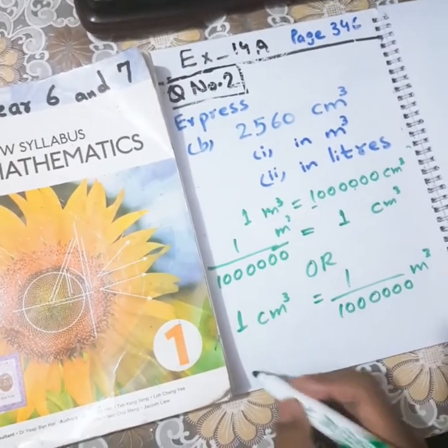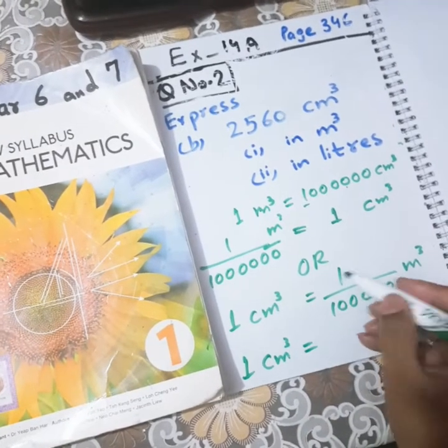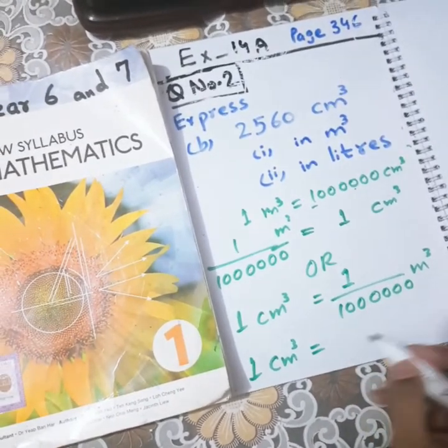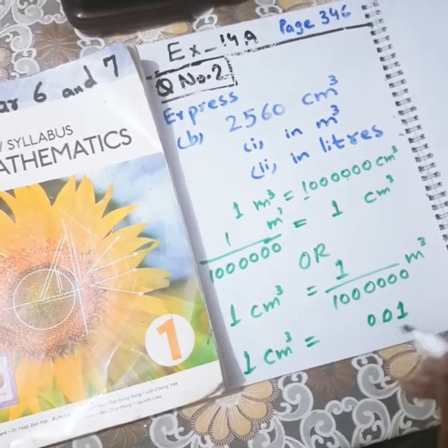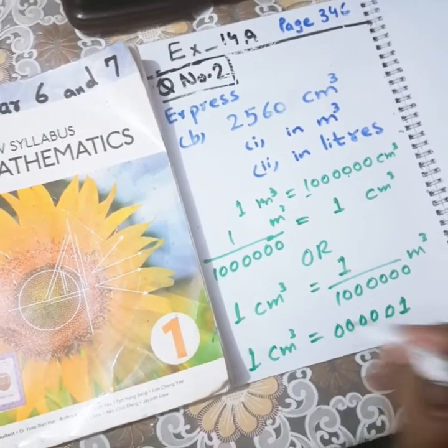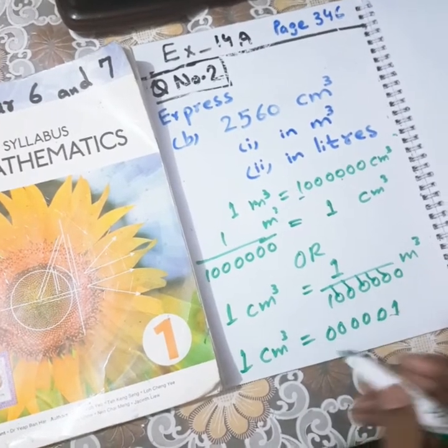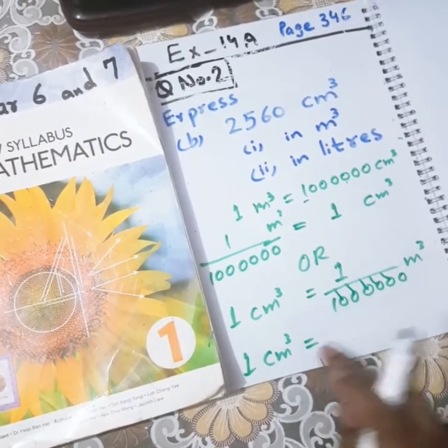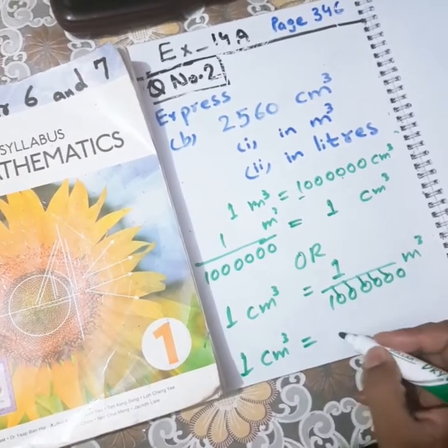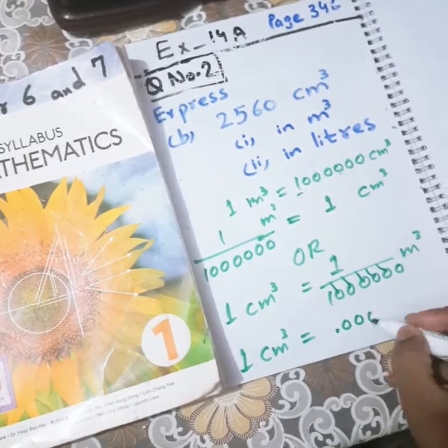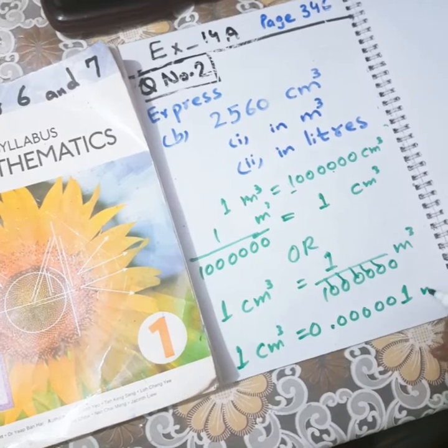So we have derived the relation 1 cm³ is equal to, actually if we divide 1 by this, we shall get 0.000001. If we use a calculator and we divide 1 by 1 million, we shall get 0.0000001. Five times 0 after the decimal point and we shall get this.